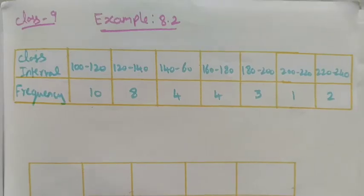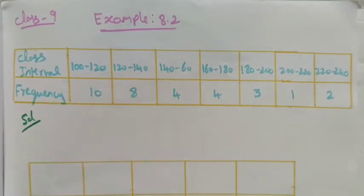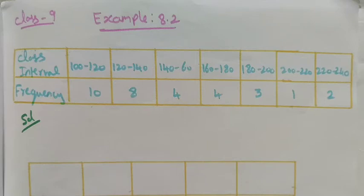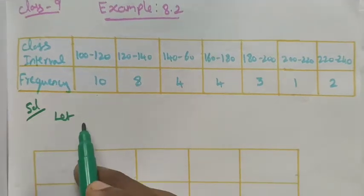We can find the mean using three different methods: the direct method, the assumed mean method, and the step deviation method. When we have larger values, the assumed mean method or step deviation method is easier to simplify. Here we are going to use the assumed mean method.